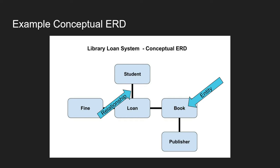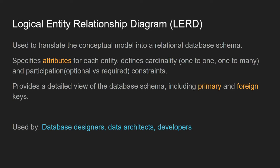Most people, even non-specialists, will be able to understand those kinds of relationship diagrams. Moving on to the second type: the logical entity relationship diagram. As we move further into the project we start to translate the conceptual model into a more relational schema. We start to build the attributes for each entity, define what's called the cardinality — the different types of relationships — and participation constraints: whether things are required or optional.